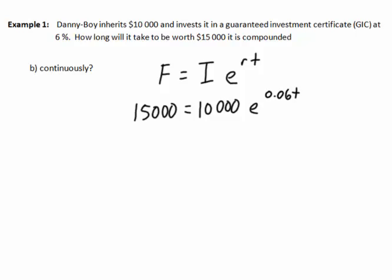This gives us an equation in base e. We still want to clean this up a little bit, so we'll divide both sides by 10,000, which will give us 1.5 equals e to the 0.06t.